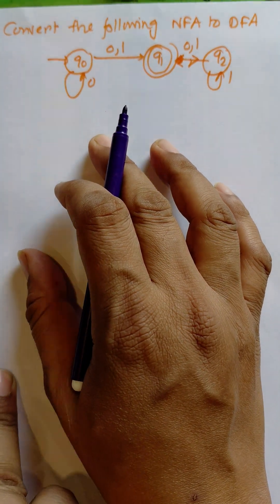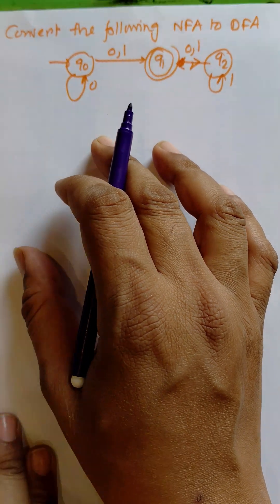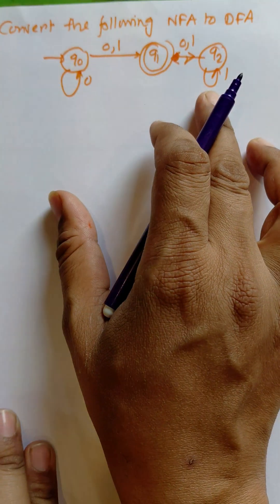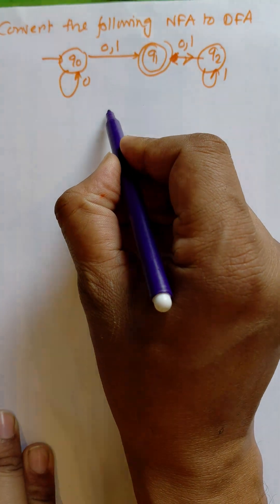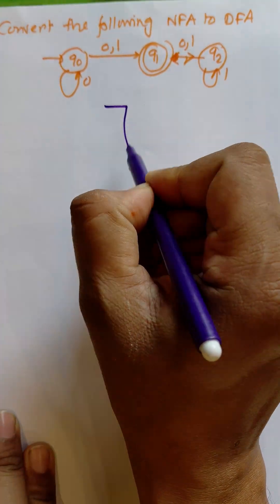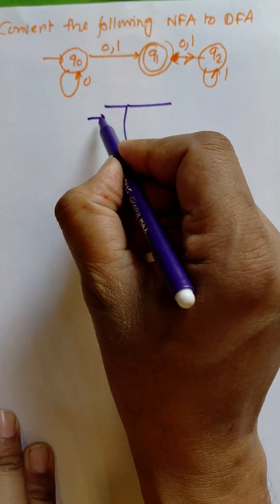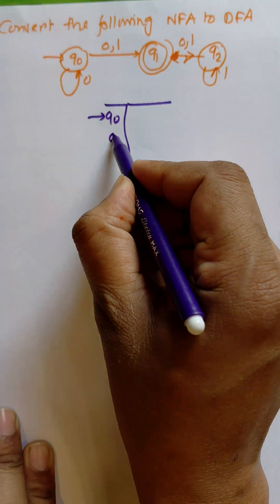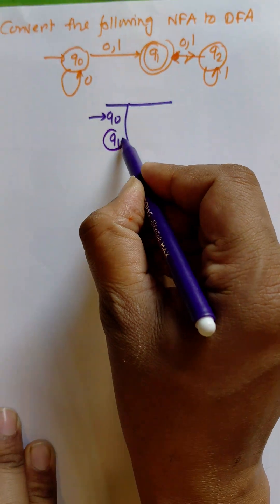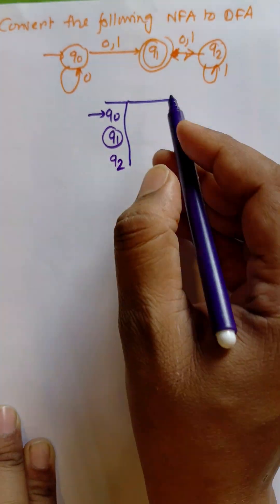Hi everybody, in this video I am going to convert the NFA to DFA. Here this is the NFA — we need to construct the transition table for the NFA. The initial state is q0, the final state is q1, and another state is q2.